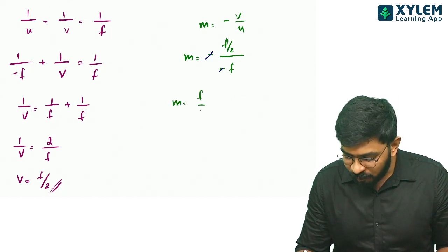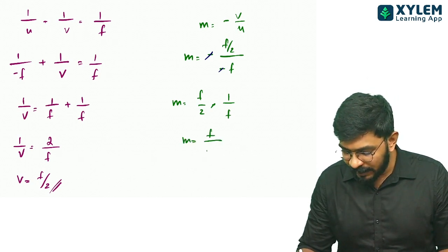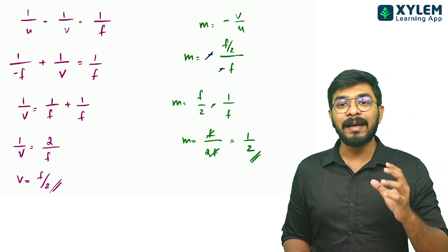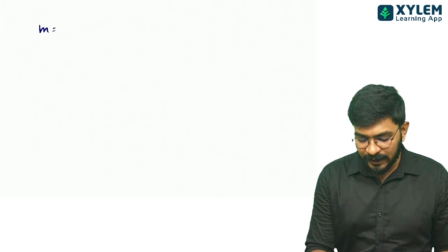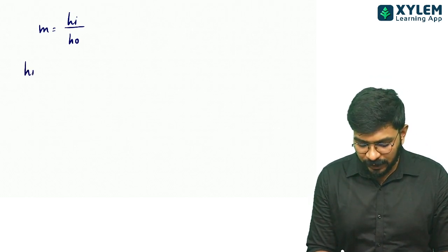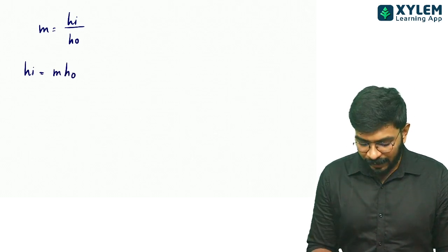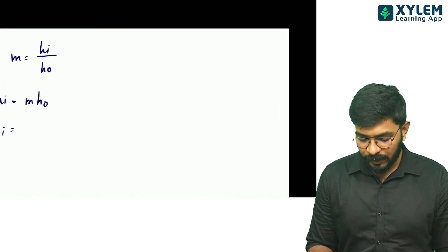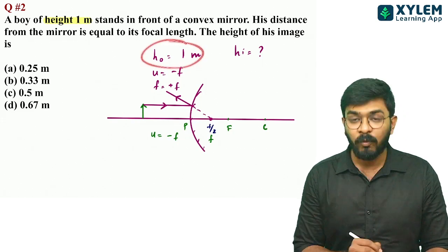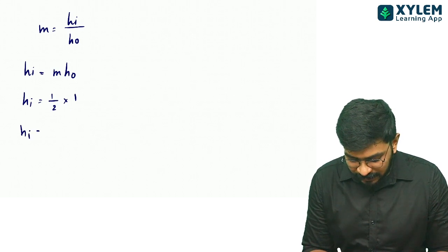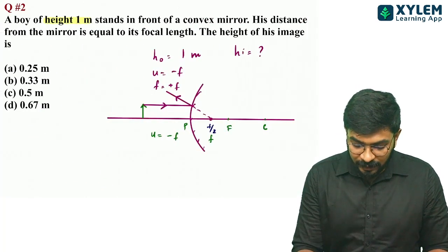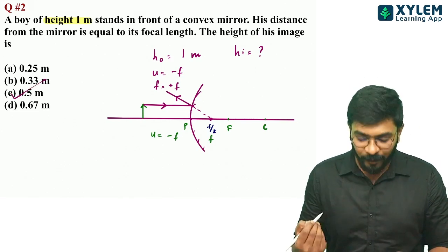So magnification M is equal to F by 2F, which gives M equal to 1 by 2. Since M equals Hi divided by Ho, the image height is 0.5 m. Option C, 0.5 m, is the answer.